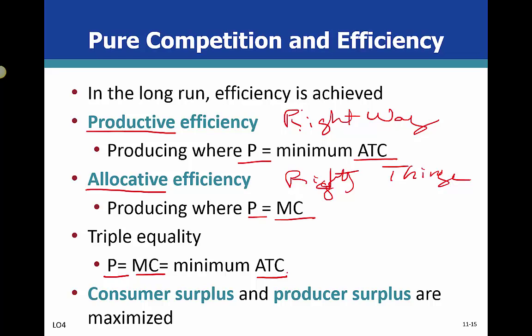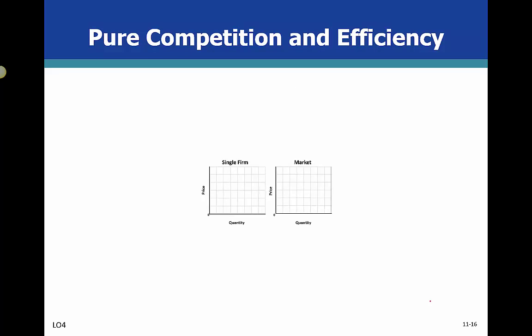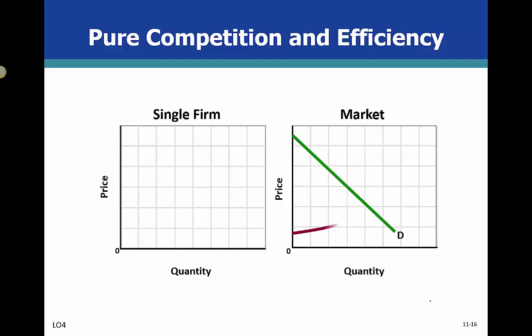These two concepts, consumer surplus and producer surplus, are maximized. When we look at our supply and demand graphs, the consumer surplus and the producer surplus are talked about in these ways. Here is equilibrium right here. The consumer surplus and the producer surplus are right here.